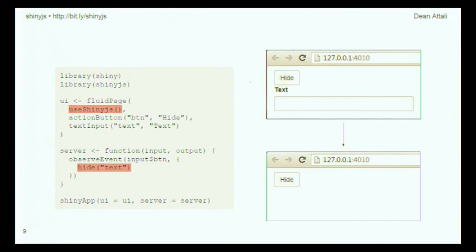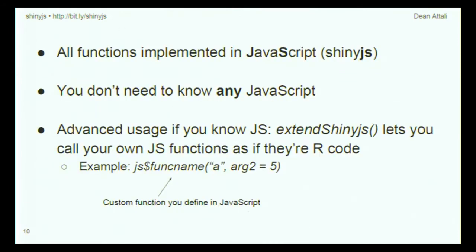Under the hood, ShinyJS uses JavaScript to implement all of its functions. But you don't need to know that as an end user — if you don't know JavaScript, that's completely fine. But if you do know JavaScript, there's another function called extendShinyJS that lets you call your own JavaScript functions from within Shiny using a familiar R-like syntax. It makes communication from Shiny to JavaScript a lot more smooth and frictionless.